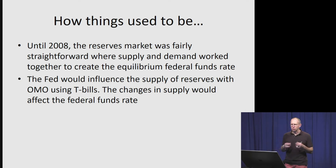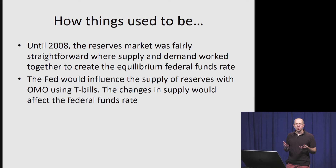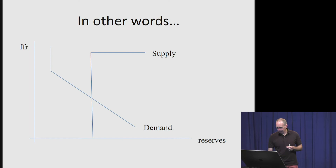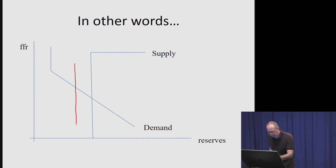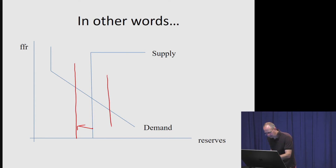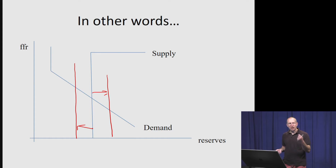Until 2008, the reserves market was a pretty standard supply and demand framework where they worked together to determine the equilibrium federal funds rate. What the Fed would do on a day-to-day or larger policy change basis was intervene in that market by buying and selling treasury securities to either keep the federal funds rate stable or cause it to rise or fall. If the Fed wanted to increase the federal funds rate, they would reduce the supply of reserves by open market treasury sales, shifting the supply curve back. If they wanted the rate to fall, they would make open market buys of treasury securities, increasing the supply of reserves.